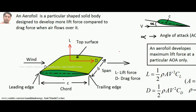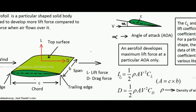When wind comes, the first point at which it touches the aerofoil is called the leading edge, and the end point of the aerofoil is called the trailing edge. Joining these two points gives the chord of the aerofoil. The span of the aerofoil is the depth inside the screen. The area of the aerofoil, also called the planform area, is B multiplied by C (span times chord).